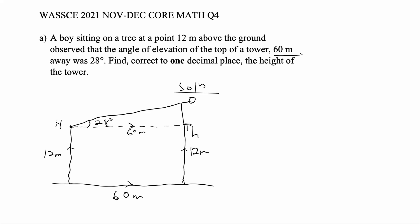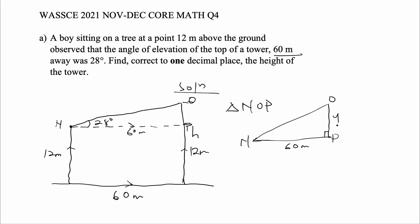Let's take triangle NOP. This would be a right-angle triangle. The length of NP is 60 meters. We don't know the length of OP, so that would be y. This angle is 28 degrees. We have our opposite and our adjacent, so we can say that tan of 28 degrees is equal to our opposite, y, over our adjacent, which is 60.